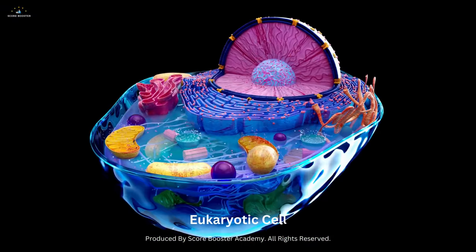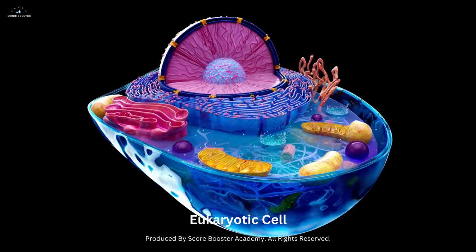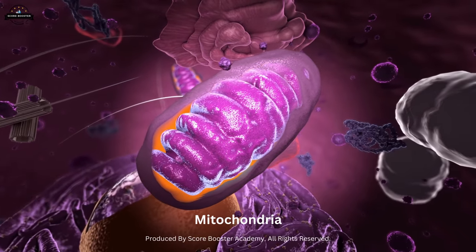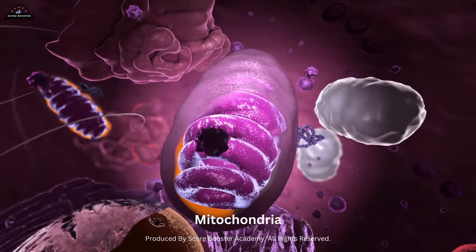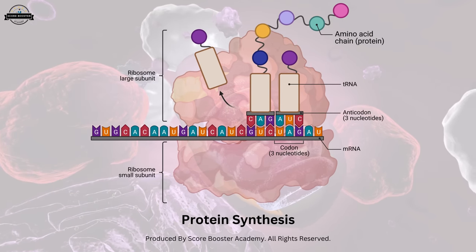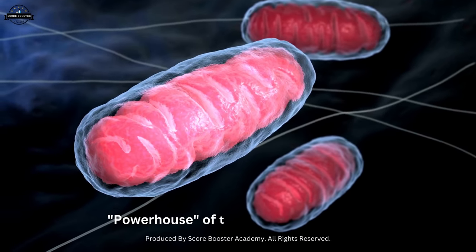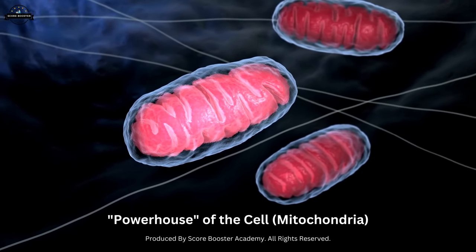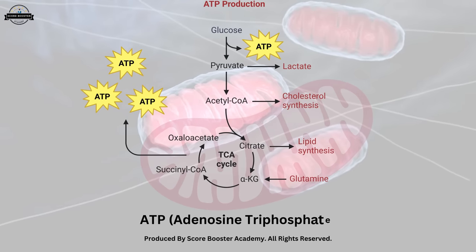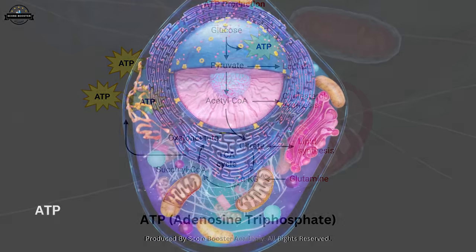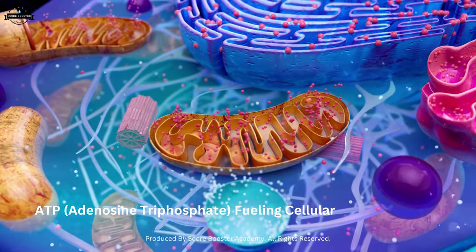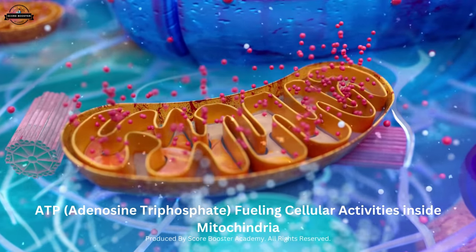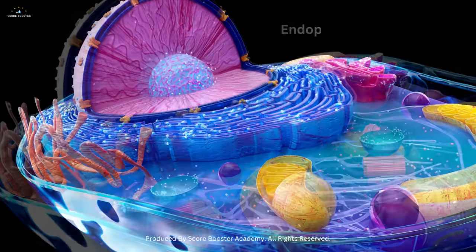Eukaryotic cells also contain specialized organelles, such as mitochondria, responsible for energy production, and the endoplasmic reticulum, involved in protein synthesis. Mitochondria, often referred to as the powerhouses of the cell, generate energy by converting nutrients into adenosine triphosphate (ATP). This energy currency fuels cellular activities, enabling organisms to carry out essential functions.